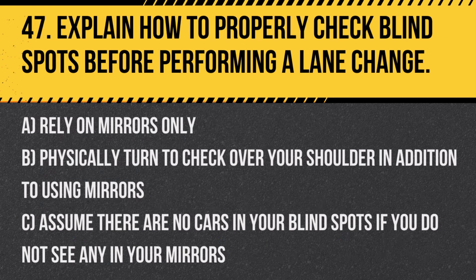Question 47: Explain how to properly check blind spots before performing a lane change. A. Rely on mirrors only. B. Physically turn to check over your shoulder in addition to using mirrors. C. Assume there are no cars in your blind spots if you do not see any in your mirrors. Answer: B. Physically turn to check over your shoulder in addition to using mirrors. This ensures that the area is clear before changing lanes.